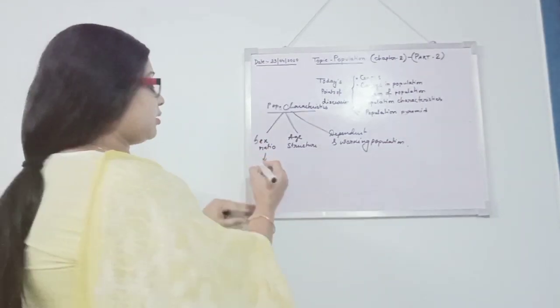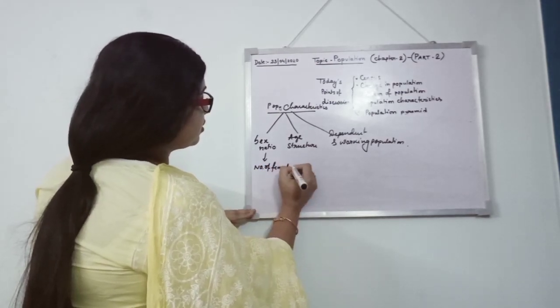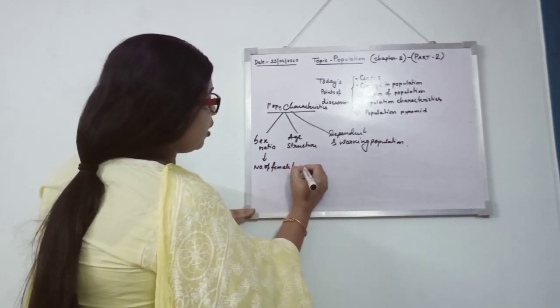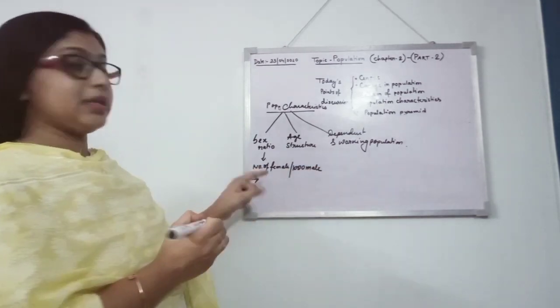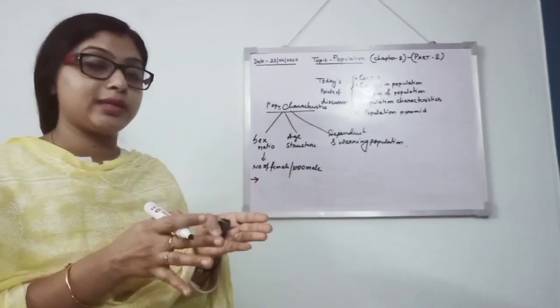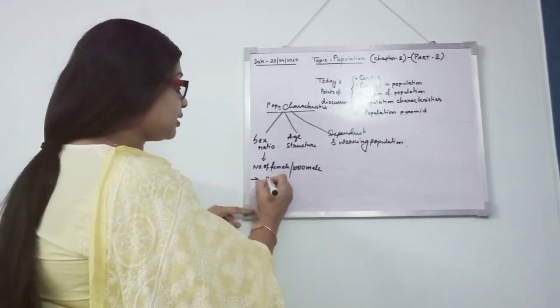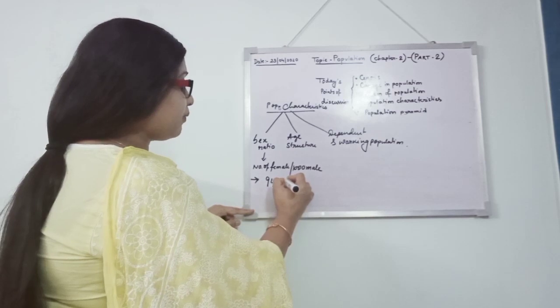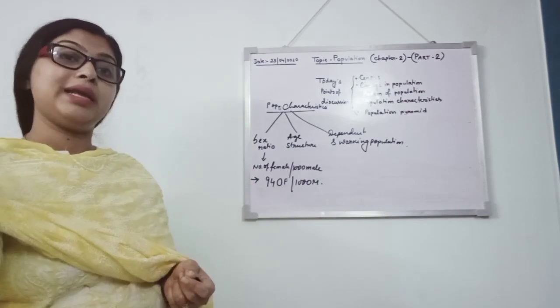The definition here: number of females per thousand of males. If we see the current status of the country, according to 2011 census, India is having 940 females per thousand males, which is also very less.